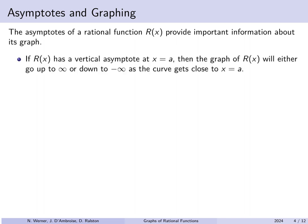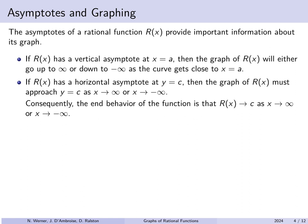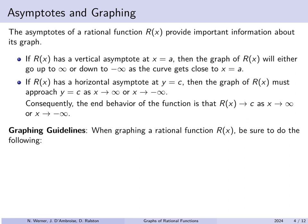The asymptotes of a rational function provide important information for graphing. If the rational function has a vertical asymptote at x equals a, the graph cannot cross it, so as x gets closer to a the height of the graph is forced to go up to infinity or down to minus infinity. If r of x has a horizontal asymptote at y equals c, the graph must approach y equals c as x goes to plus or minus infinity — that is the end behavior of the function.